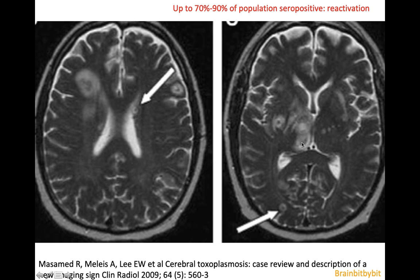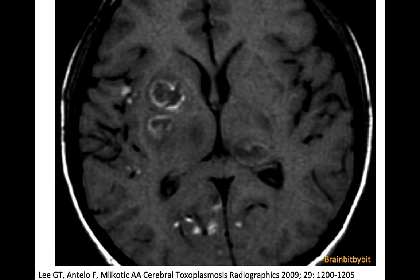The target lesions are T2 hypointense with a rim of edema, and the edema seems disproportional to the size of the inner circle. On post-contrast images, there is rim enhancement with a central nodule that also enhances.